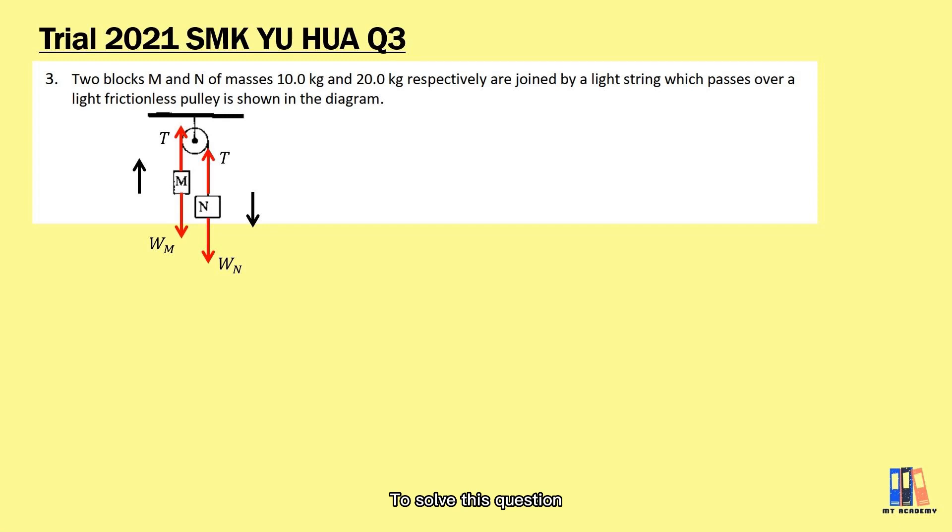To solve this question, let's define the equations based on each block. First is block m: the tension in the string is pulling m up. So we have T minus mg equals 10a. Then for block M, since it is moving down, we have the weight of block M minus the tension equals 20a.